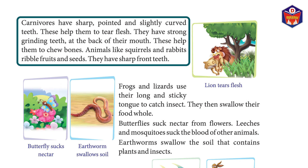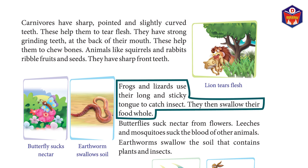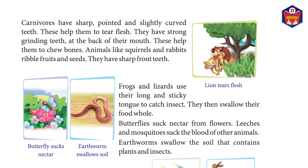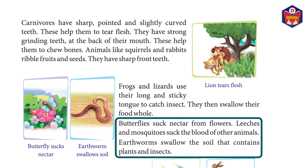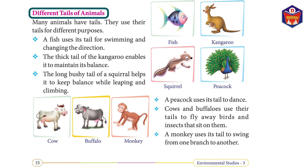Animals like squirrels and rabbits nibble fruits and seeds; they have sharp front teeth. Frogs and lizards use their long and sticky tongue to catch insects, then swallow their food whole. Butterflies suck nectar from flowers. Leeches and mosquitoes suck the blood of other animals. Earthworms swallow soil that contains plants and insects.